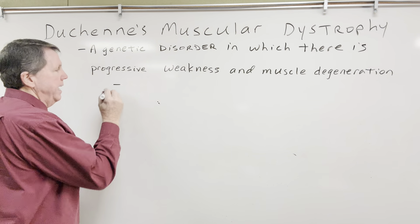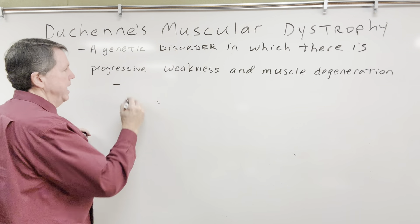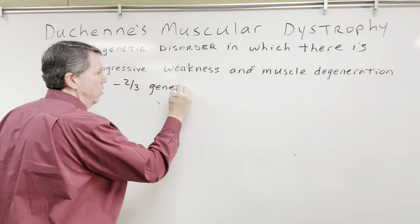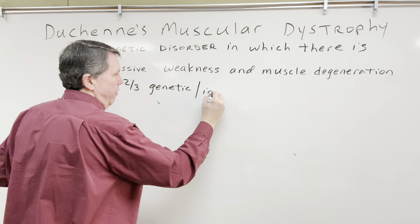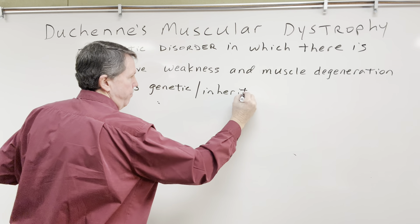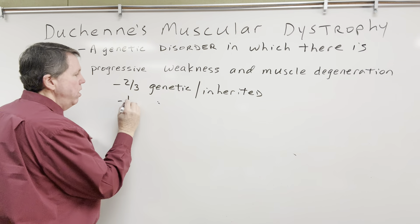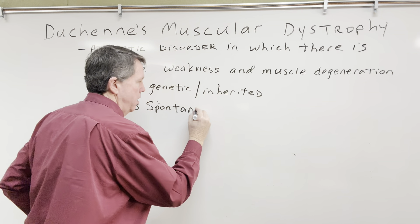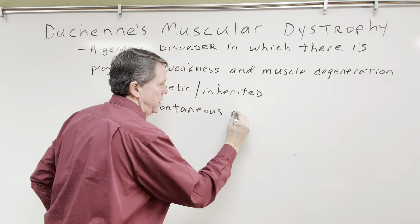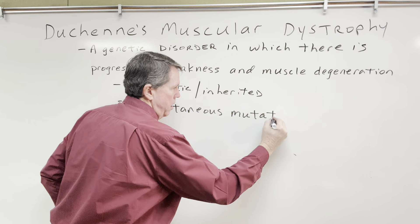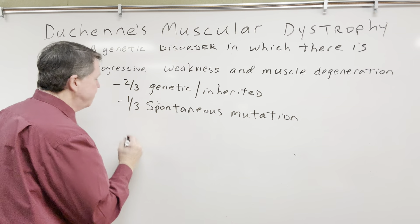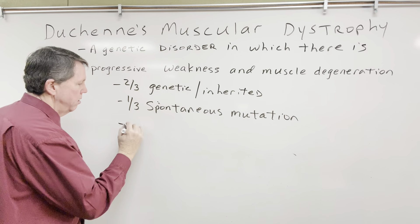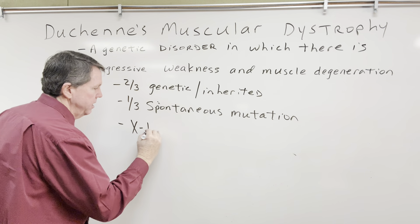Who gets Duchenne's muscular dystrophy, and how do we get it? Well, two-thirds of the time it's genetic — in other words, inherited. That means one-third of the time it's due to a spontaneous mutation. It's found on the X chromosome and is usually a recessive X-linked disorder.